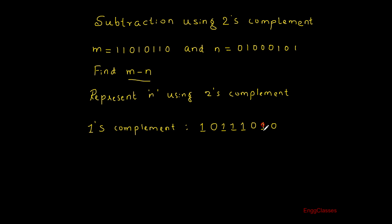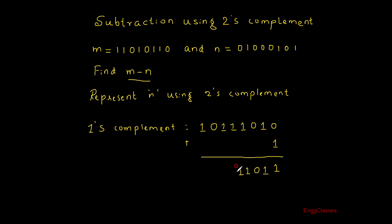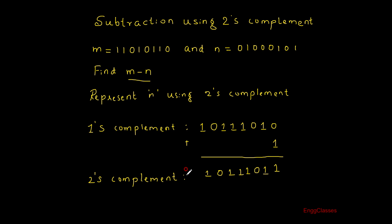I am actually looking for two's complement, that is why I found one's complement first. Then I add 1 to it to get the two's complement. So 0 plus 1 is 1, and the rest of the digits remain as they are: 1, 0, then three ones, then 0, then 1. So this is the two's complement of n.